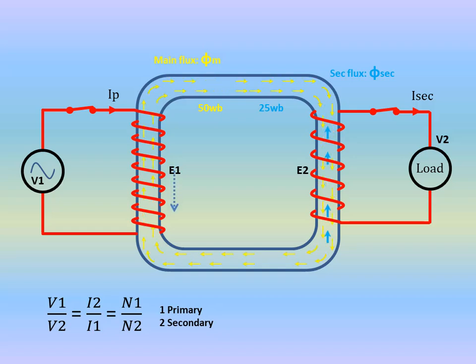Which leads to a reduction in the primary back EMF. With the reduction in back EMF, the potential difference across the primary winding increases. This causes the current in the primary winding to rise, which in turn strengthens the main flux to counter the secondary flux. As a result, the main flux increases to 75 weber. However, despite these changes, the net flux in the core remains constant at 50 weber throughout the entire range from no load to full load operation.